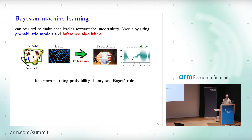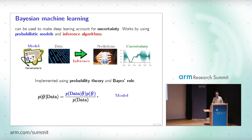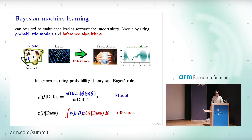This is all implemented using probability theory and Bayes' rule. Bayes' rule is used to obtain a posterior distribution for the parameters of the model given the data, representing our uncertainty about which values of the model parameters could have generated the data. To make predictions, the key difference from other techniques is that instead of considering a single value of the model parameters theta — for example, the MAP estimate — we integrate with respect to the posterior distribution, considering all possible values of the model parameters, each weighted by its posterior probability. By doing so, we obtain a reliable estimate of uncertainty.